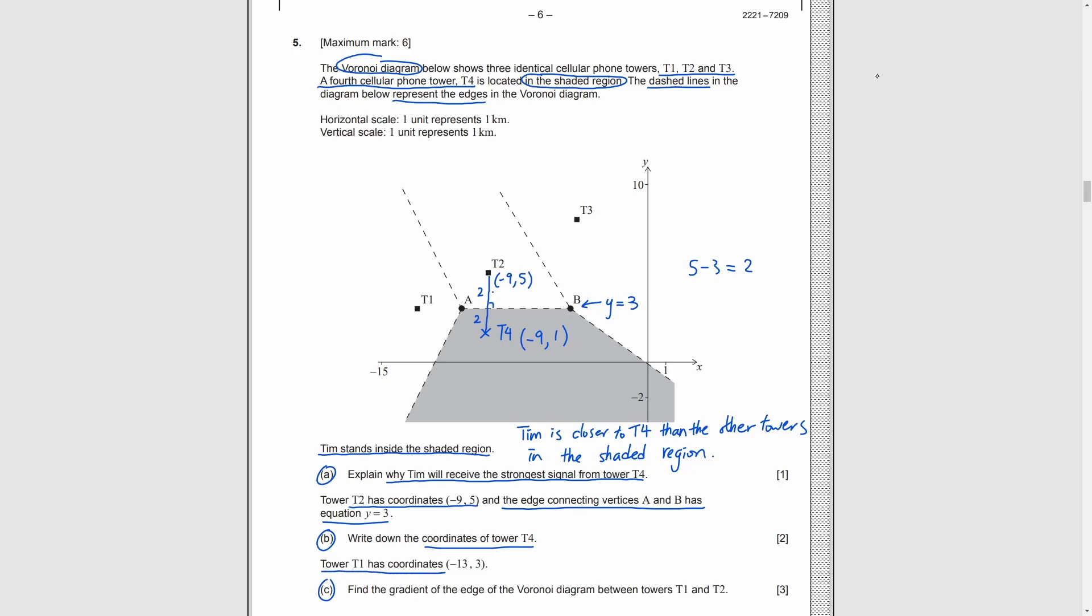Part C, we have the coordinates of T1 and we want to find the slope of the edge between T1 and T2. Similar concept to part B, the edge should be perpendicular to the line connecting T1 and T2. So, we try to find the slope of this line first. 5 minus 3 over negative 9 minus negative 13, which is half. As the edge is perpendicular to this line, its slope should be negative reciprocal to half, which is negative 2.